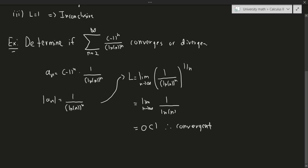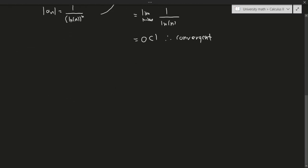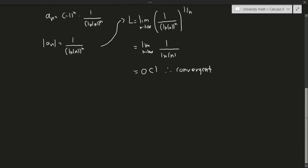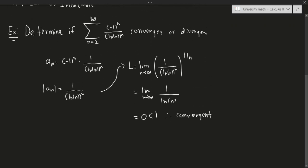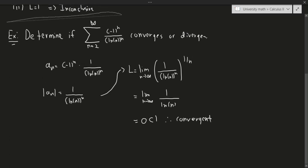So that's not too bad. This is a bit easier to work with than the ratio test, depending on what kind of series we have. If you have powers of n, it's usually easier to use the root test to approach this limit. So let's move on to the next example.